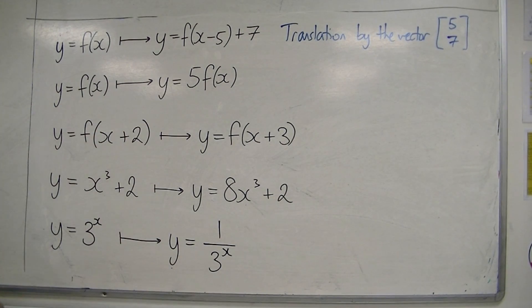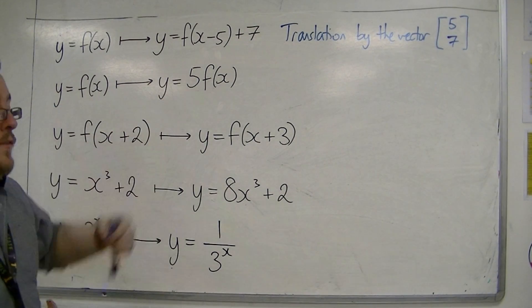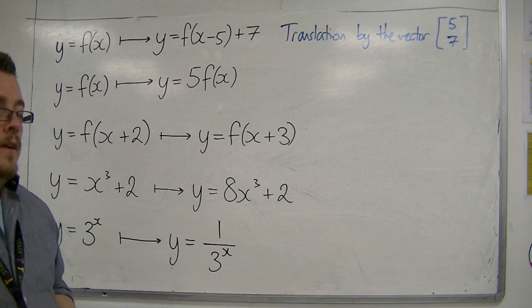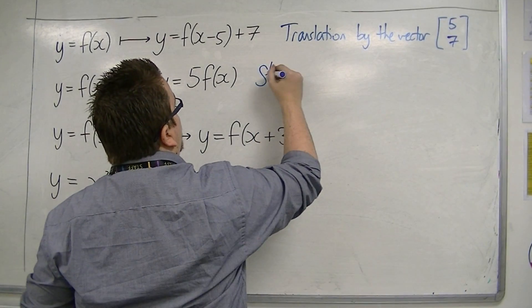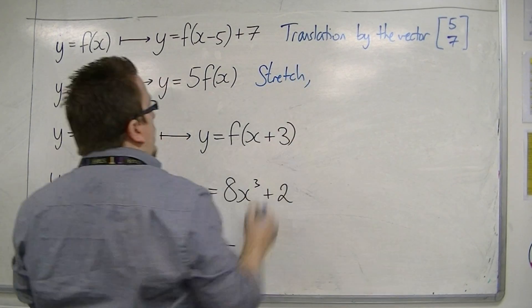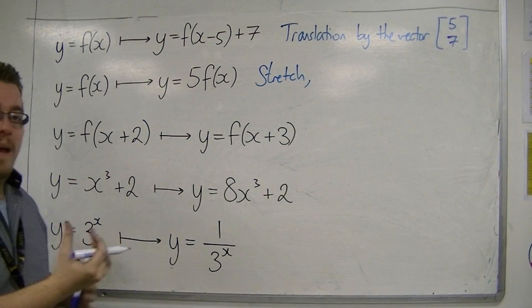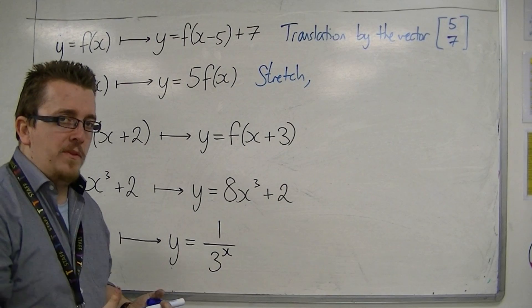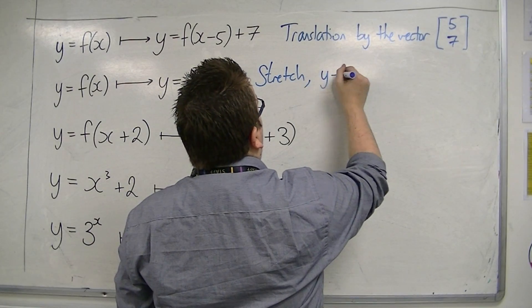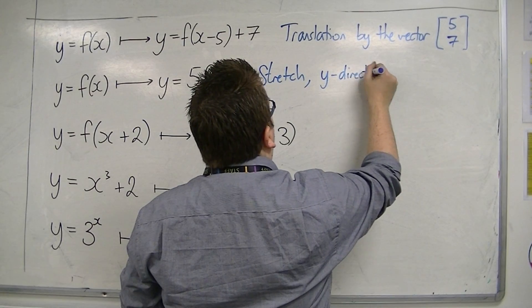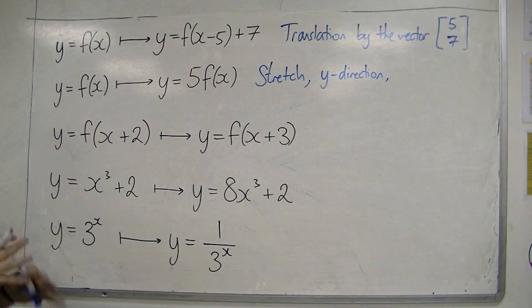For this next one, I've got a multiplier, and a 5 has appeared outside the bracket, so that would mean that it is definitely a stretch. Now, because the number hasn't appeared inside the bracket, that must mean that it is in the y-direction.